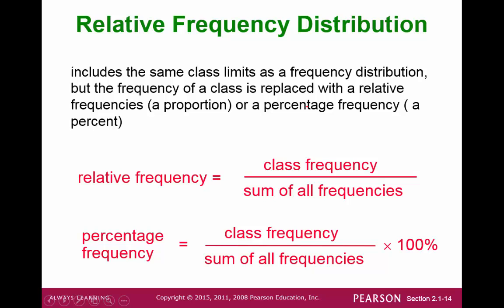A related topic to frequency tables would be a relative frequency distribution. A relative frequency simply puts our frequency table into a percent form. So the relative frequency would be calculated by finding a class frequency divided by all the sums of the frequencies. And then you can change that into a percentage by just multiplying by 100%.